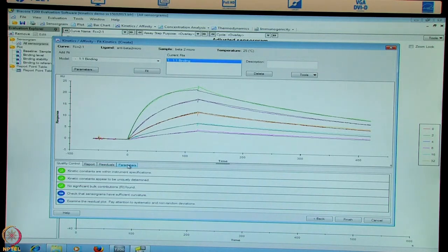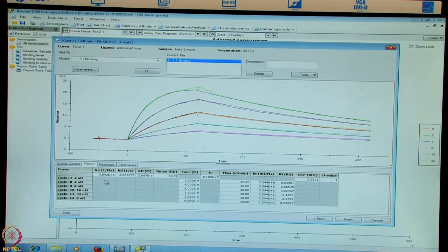Each of them has data from this experiment. To start with, we go on to the quality control tab and see here all the three are in green with kinetic constants within instrument specifications, uniquely determined, and no bulk contributions found. We have learned from our theoretical sessions, bulk contributions will be more if there is a mismatch between buffer and sample.